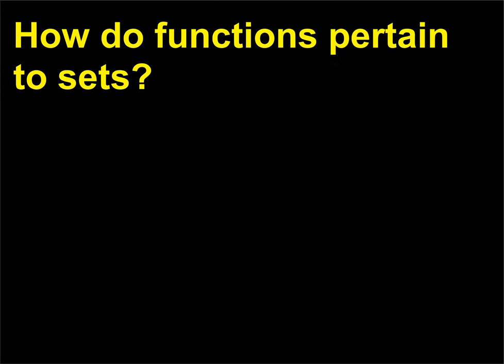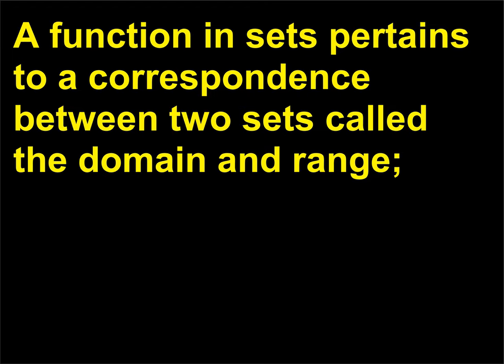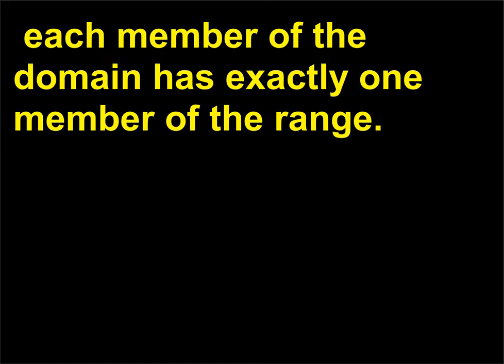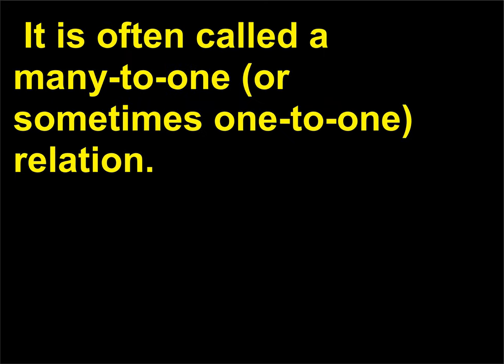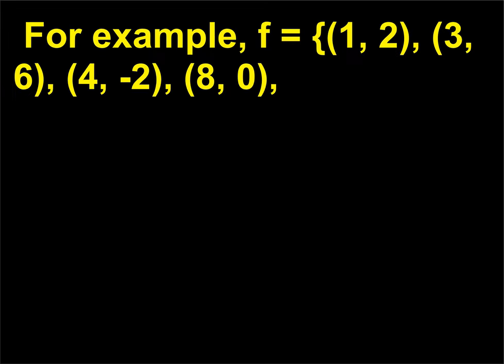How do functions pertain to sets? A function in sets pertains to a correspondence between two sets called the domain and range. Each member of the domain has exactly one member of the range. It is often called a many-to-one, or sometimes one-to-one, relation. For example,